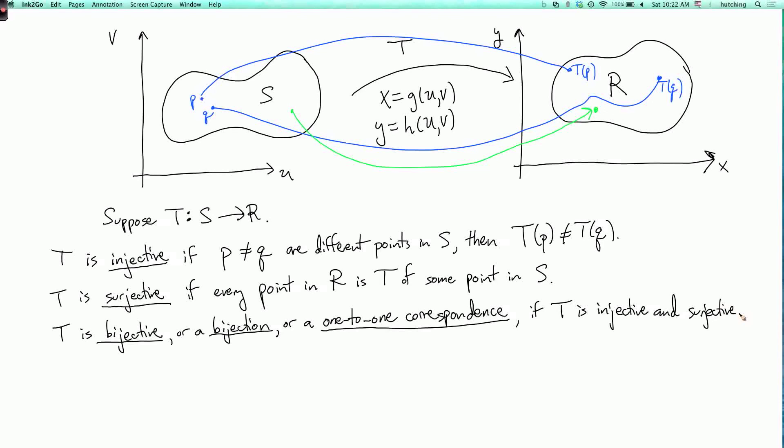So that means that every point in R comes from exactly one point in S. Injective means a point in R can't come from more than one point in S. And surjective means every point in R has to come from at least one point in S. So bijection means every point in R comes from exactly one point of S. And it's called a one-to-one correspondence because each point in S is getting paired up with a different point in R.